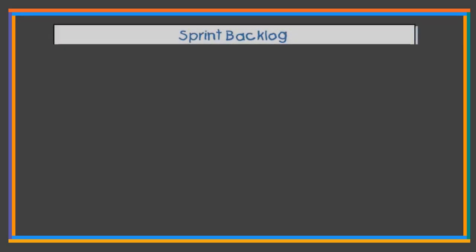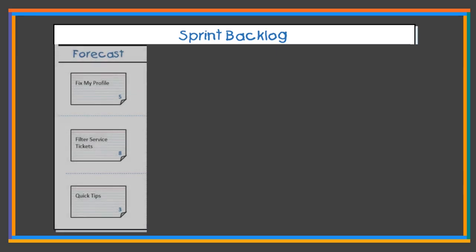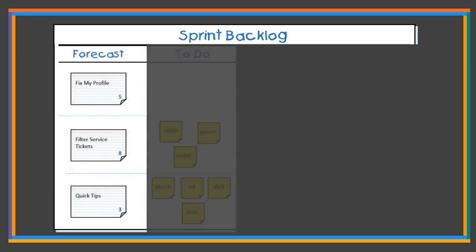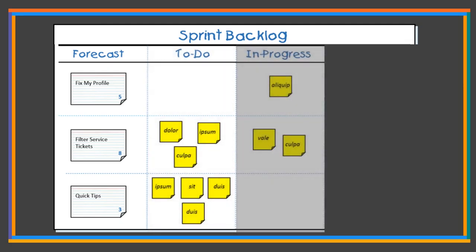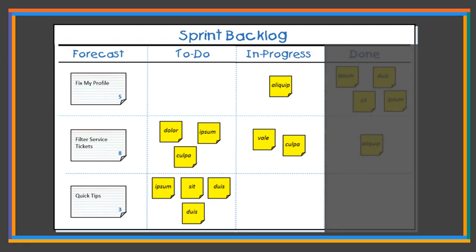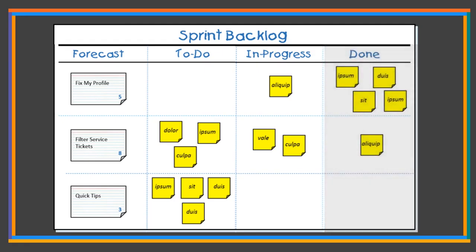The sprint backlog is the set of product backlog items selected for the sprint, plus a plan for delivering the product increment and realizing the sprint goal. The sprint backlog is a forecast by the development team about what functionality will be in the next increment and the work needed to deliver that functionality into a done increment.